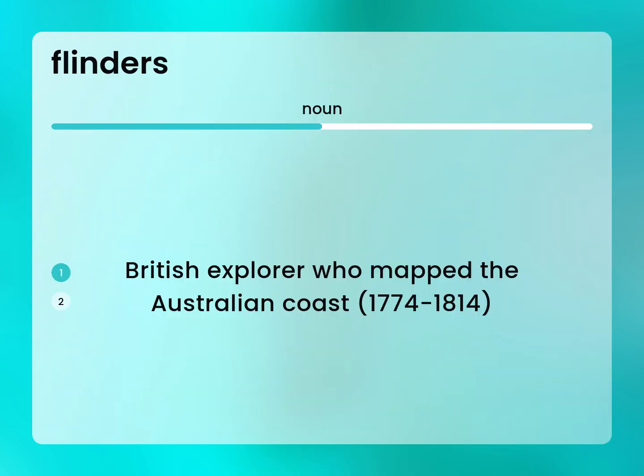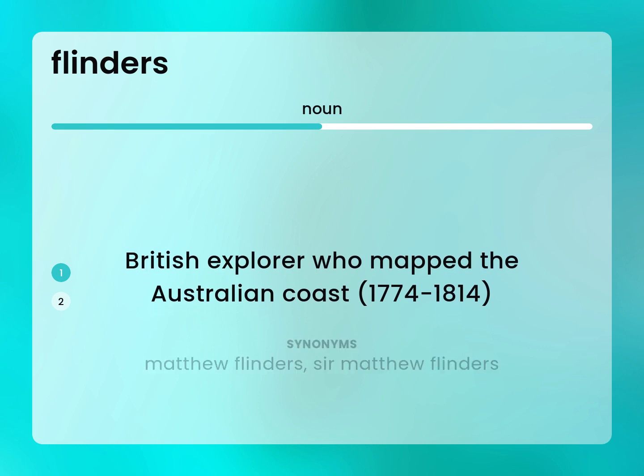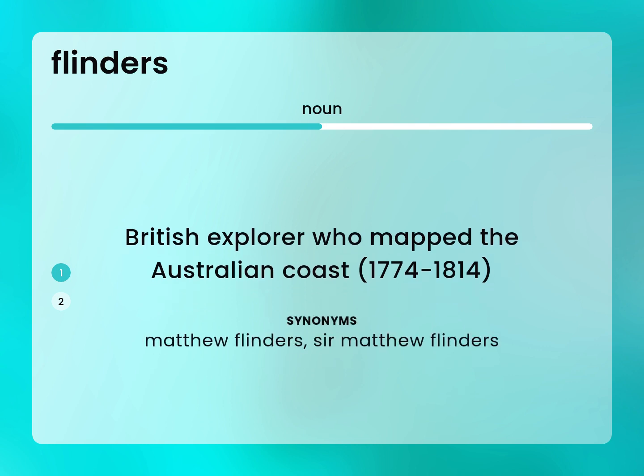British explorer who mapped the Australian coast, 1774 to 1814. Matthew Flinders. Sir Matthew Flinders.